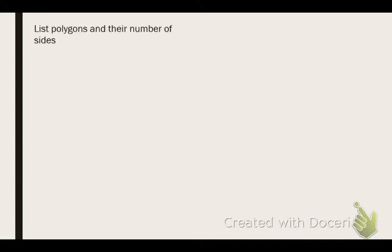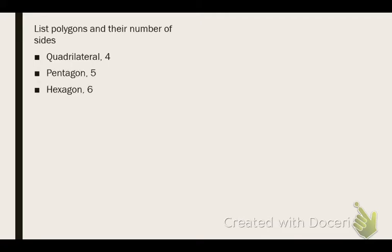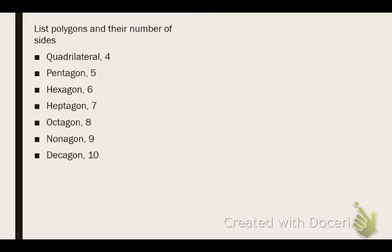For the last section, list the polygons and their number of sides. The example given is a triangle with three sides. A quadrilateral has four, a pentagon has five, a hexagon has six, a heptagon has seven, an octagon has eight, a nonagon has nine, a decagon has ten, a hendecagon has eleven, and a dodecagon has twelve.